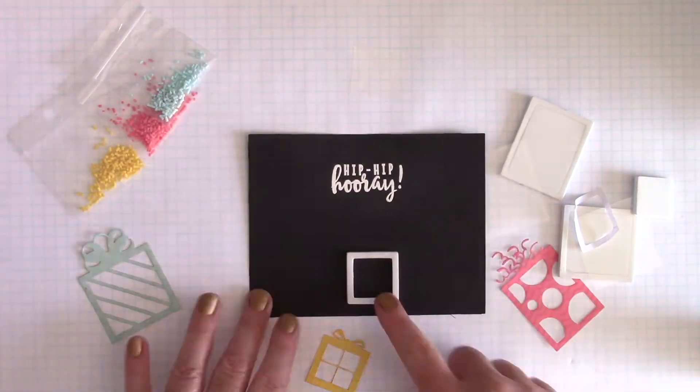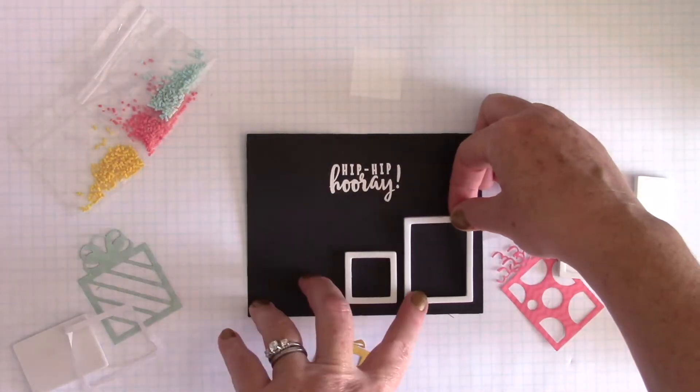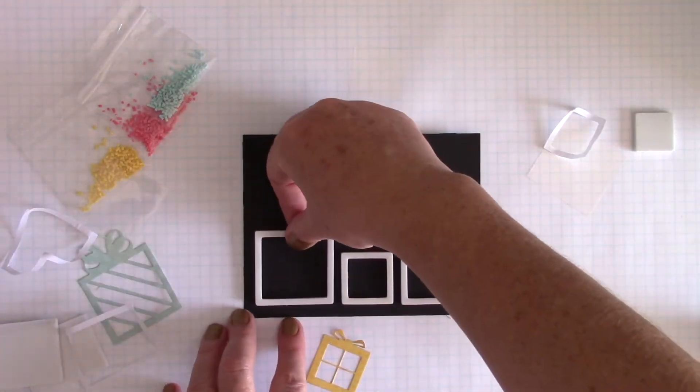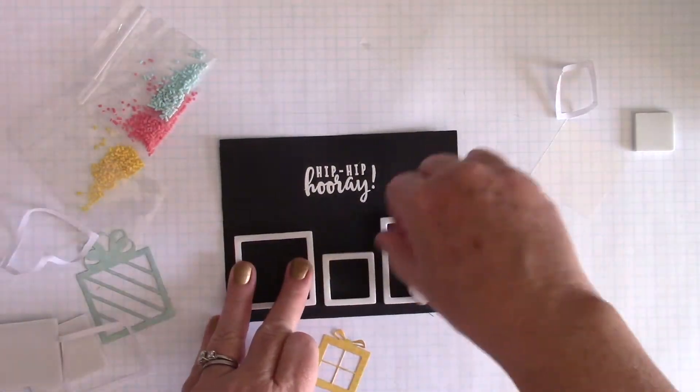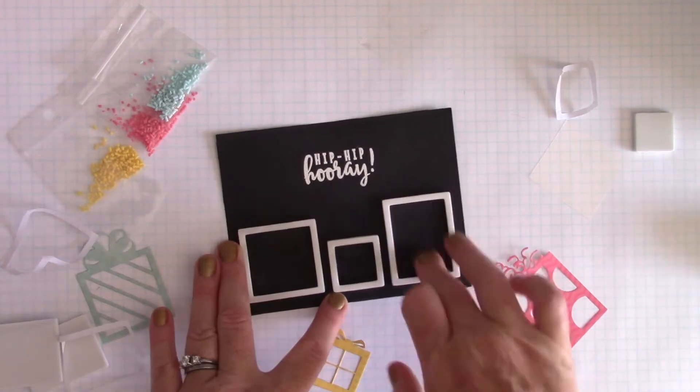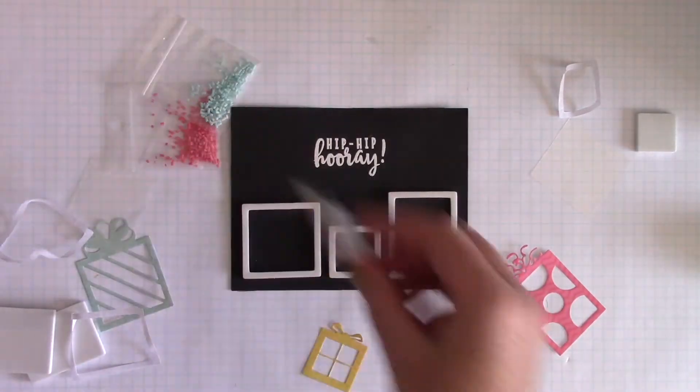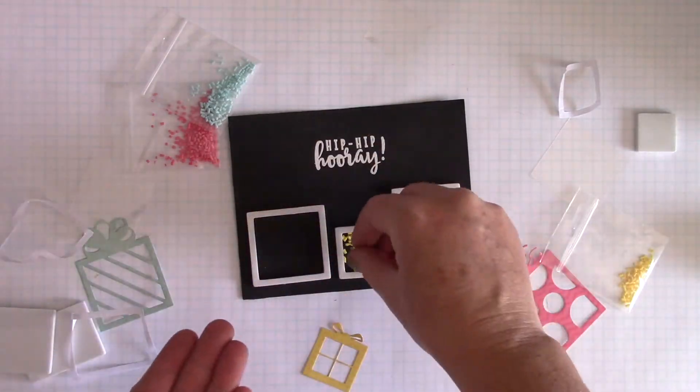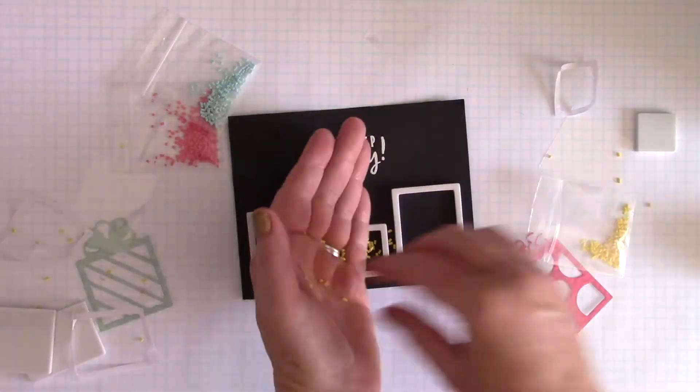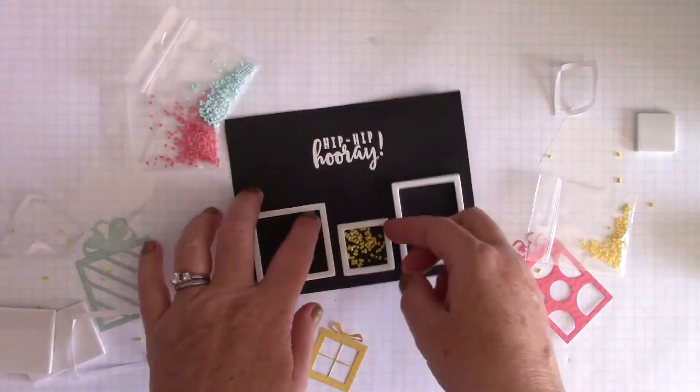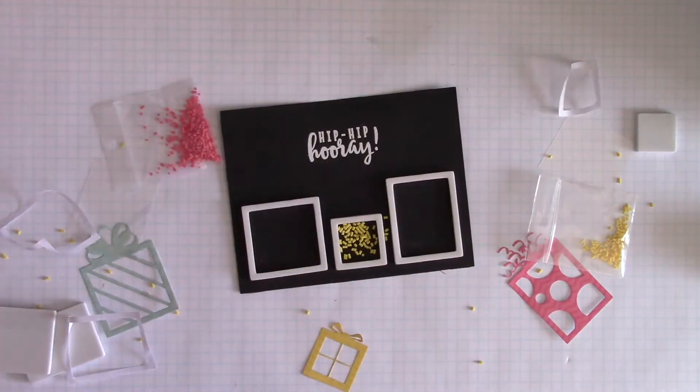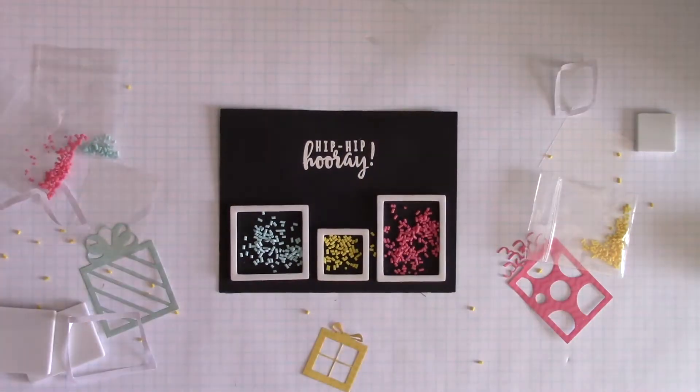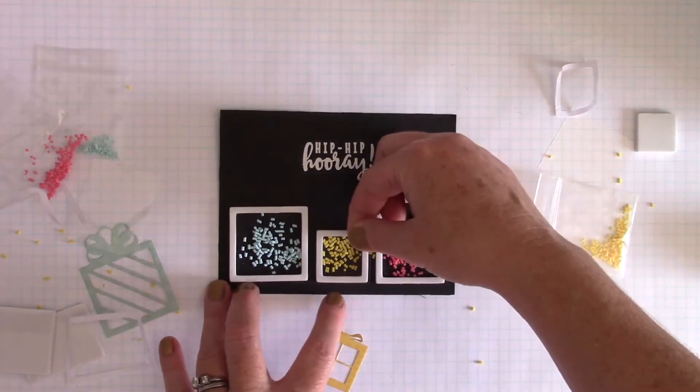Now I'm going to pop out the center of those foam squares. You can save those for different projects. You can use them as dimensional adhesive or you can cover them with glitter. And all three of them, I'm just going to use that little frame there, that foam frame. I'm going to run some anti-static around the inside. That's going to make my shakers really move around and not stick to the edge. And now I'm going to put the coordinating color of topping inside the color of present that I've chosen. So I have yellow in the small one, I have blue in the square there, and I have pink in the largest size.